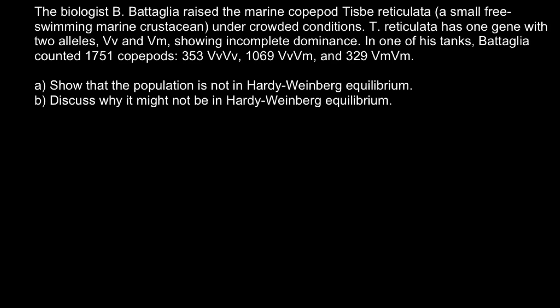Here's a problem. The biologist Bataglia raised the marine copepod TSB reticulate, a small free-swimming marine crustacean, under crowded conditions. The reticulate has one gene with two alleles — VV and VM — showing incomplete dominance. In one of his tanks, Bataglia counted 1,751 copepods and the genotypes were as follows.